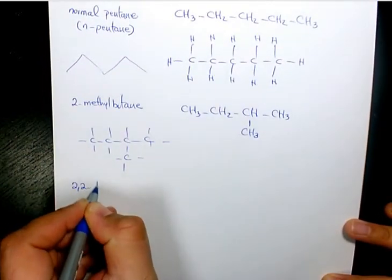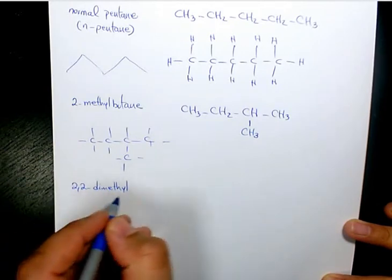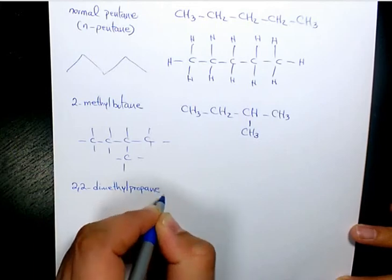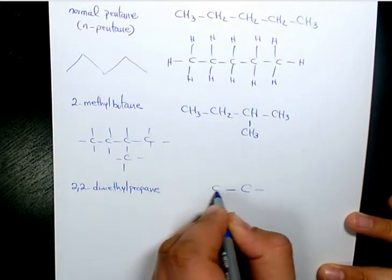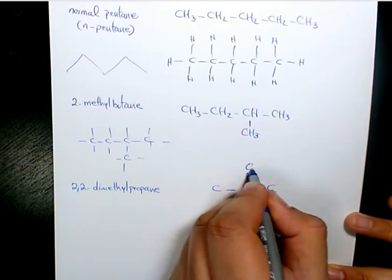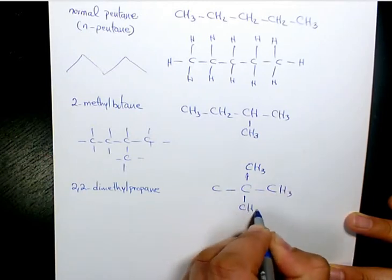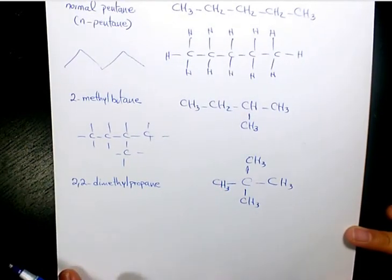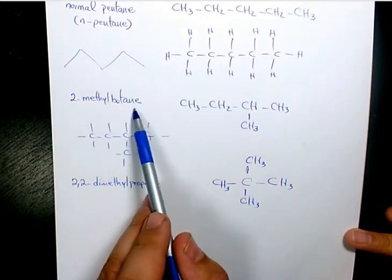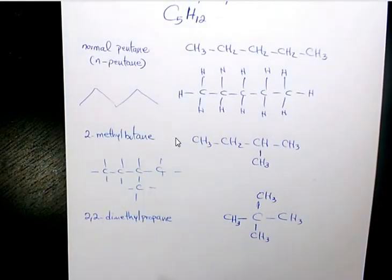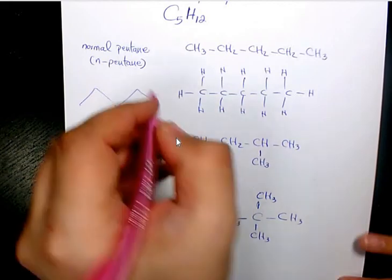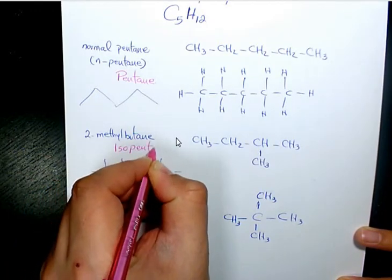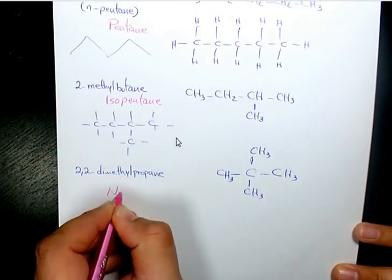The next one is going to be 2,2-dimethylpropane, which has a carbon in the middle and four CH3 groups attached to it. So the common names: the first isomer is pentane, the second one is isopentane, and this last one is neopentane.